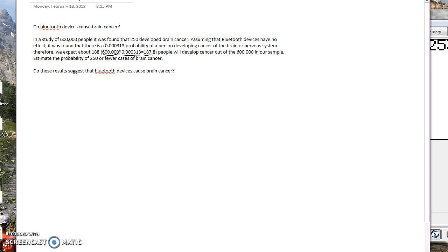So we're going to use the normal to approximate the binomial. I'm going to walk through a few steps. The first thing we're going to want to do is get N, P, and Q. N is going to be the total number of people in our samples. So that will be 600,000. P is going to be the probability that somebody develops this cancer. So 0.000313. And then finally, to find the value of Q, we do 1 minus P, which would be 1 minus 0.000313, which is 0.999687.